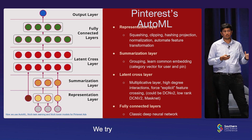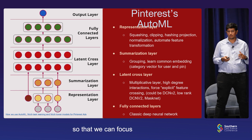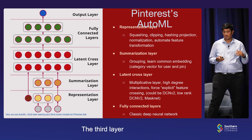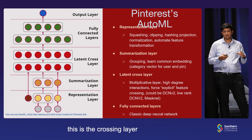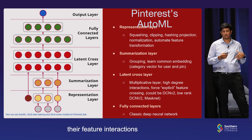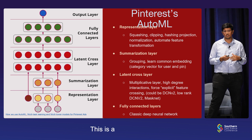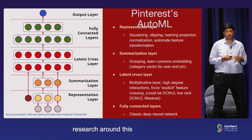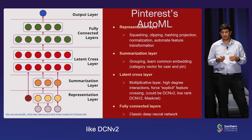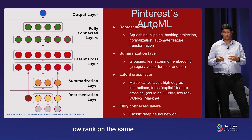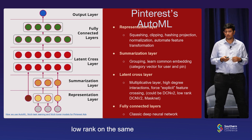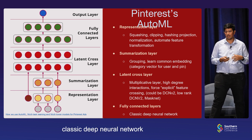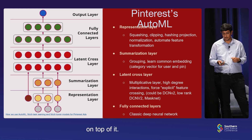Then we had a concept of a summarization layer, which brings in ideas from the previous world where we were hand-crafting features — specifying what features you want to learn together, enabling learning a common embedding for them. Over time, we tried to reduce this kind of hand-craftedness to focus just on raw features. The third and most important layer is the crossing layer, where feature interactions are learned at higher orders. This is a multiplicative layer, and there's published research around this from Google — like DCN and V2. If you have latency concerns, there are low-rank versions of the same. And finally, we have fully connected classic deep neural network layers on top of it.